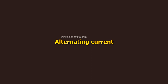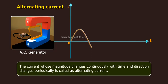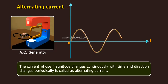Alternating current: The current whose magnitude changes continuously with time and direction changes periodically is called alternating current.